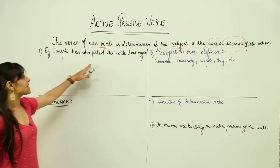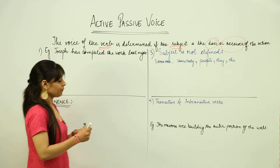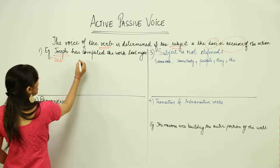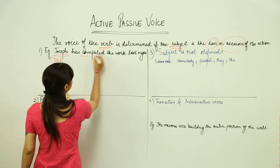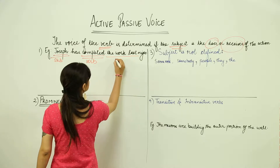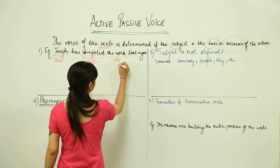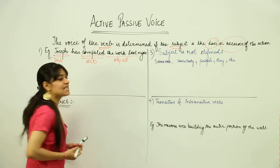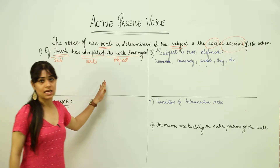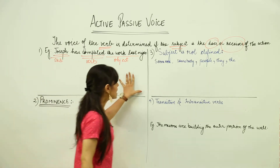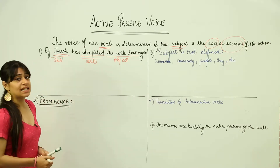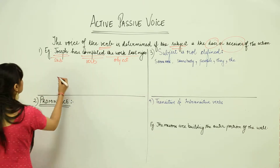Joseph has completed the work last night. Here Joseph is the subject, completed is the verb, and the work last night is the object. In this case, the prominent thing is the subject in the sentence. For this, the sentence becomes an active voice.